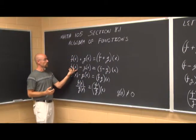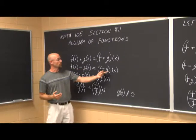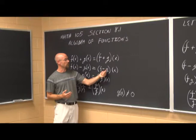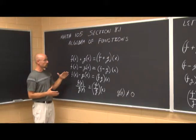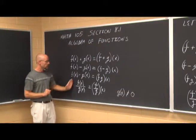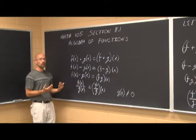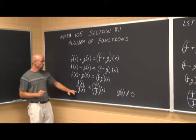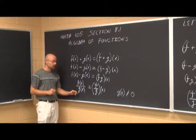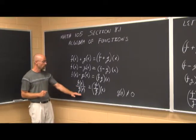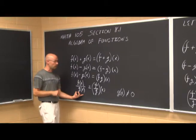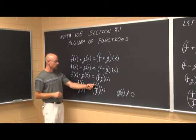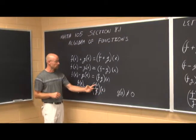When we look at subtraction, the notation works the same way — the function f minus g, both have the same variable x. As I mentioned with domain, addition and multiplication won't change the domain. But with division, we can never divide by zero. If g of x is in the denominator, we also have to exclude any value where g of x equals zero, because that would make the operation undefined.